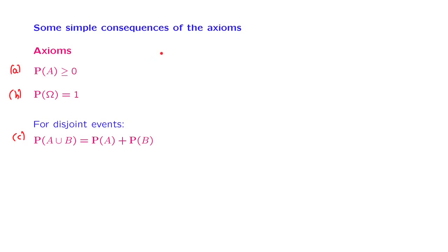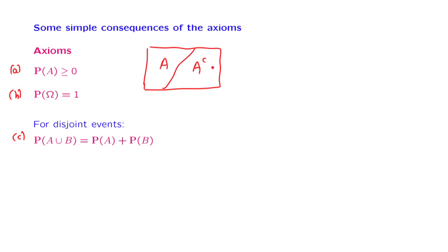We start as follows. Let us look at a sample space and a subset of that sample space — call it A — and consider the complement of that subset. The complement is the set of all elements that do not belong to A. So a set, together with its complement, makes up everything, which is the entire sample space. On the other hand, if an element belongs to A, it does not belong to its complement, so the intersection of a set with its complement is the empty set.